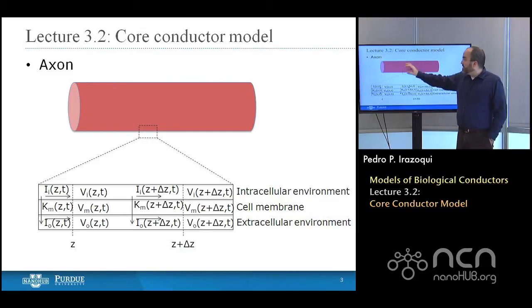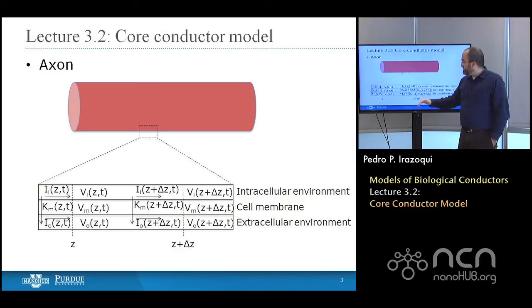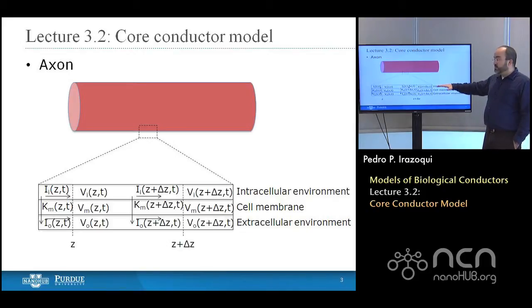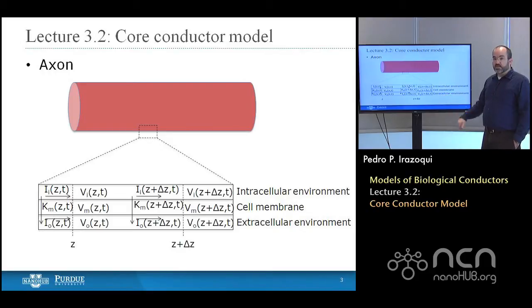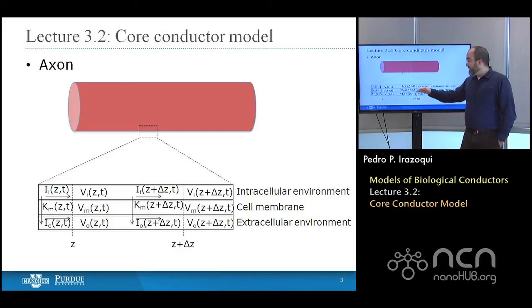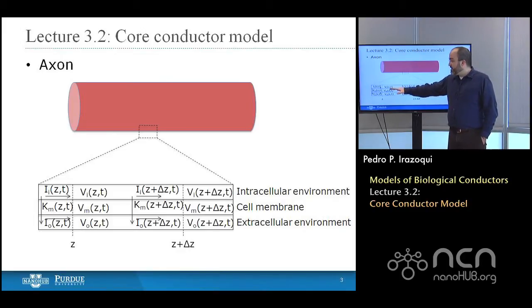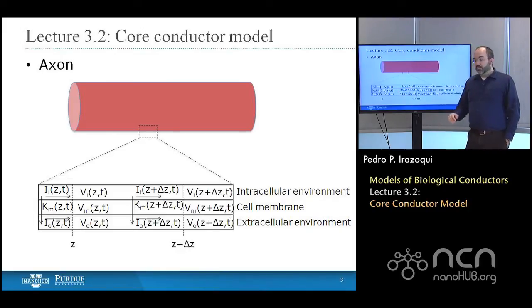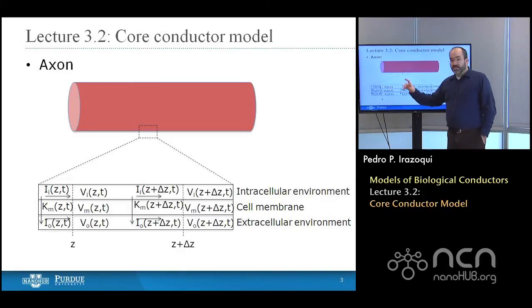Consider an axon: if you zoom in and take a segment out of the membrane of that axon and break that segment up into three separate zones — the intracellular environment on the inside of the axon, the membrane itself, and the extracellular environment on the outside of the axon — you can talk about currents inside, outside, and in the membrane, and voltages in those same locations.